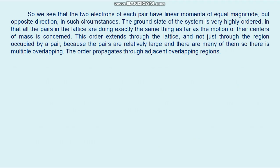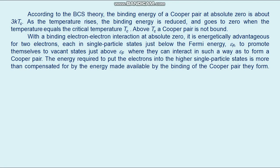This is why the system is superconducting. According to BCS theory, the binding energy of the Cooper pair at absolute zero is about 3k·T_c. As the temperature rises, the binding energy is reduced and goes to zero when the temperature equals the critical temperature T_c. Above T_c, a Cooper pair is not bound. At absolute zero it is energetically advantageous for two electrons each in single-particle states just below the Fermi energy ε_f to promote themselves to vacant states just above ε_f, where they can interact to form a Cooper pair. The energy required is more than compensated by the binding energy of the Cooper pair.